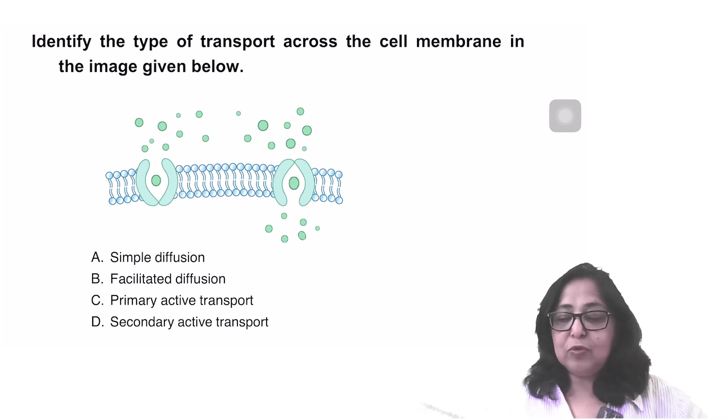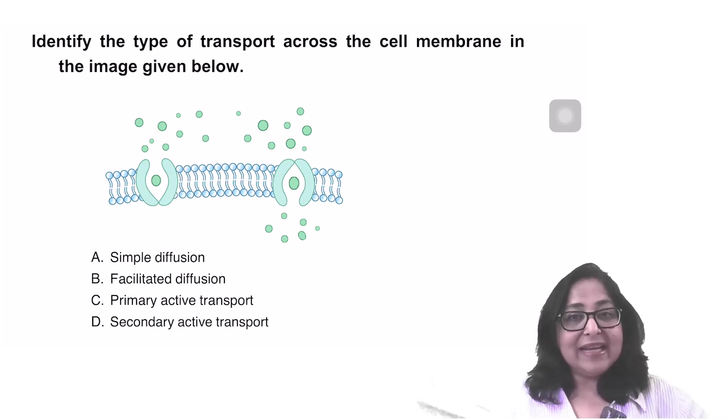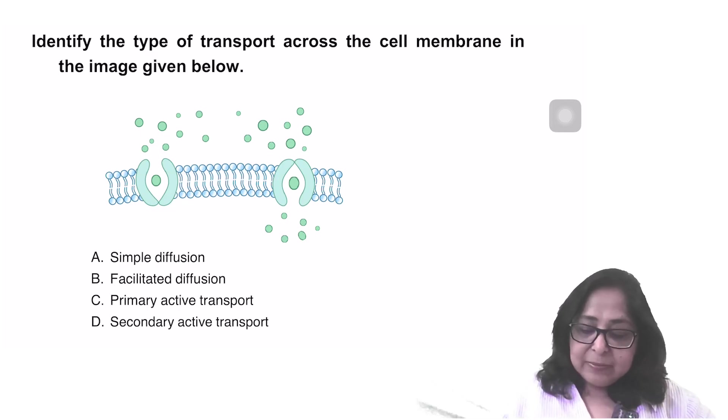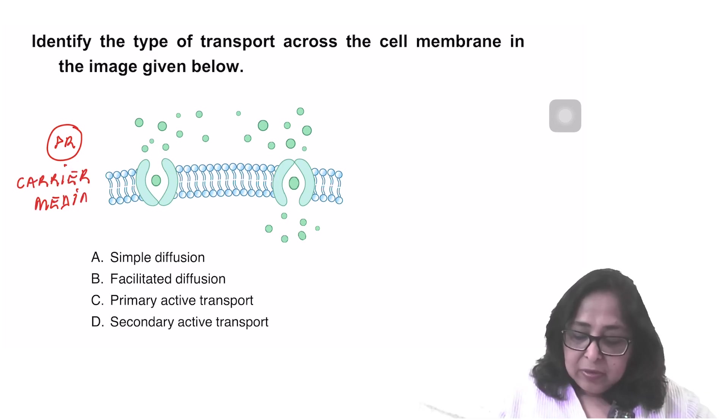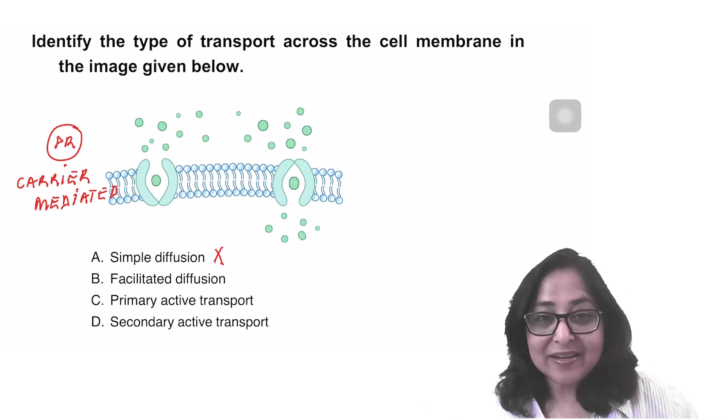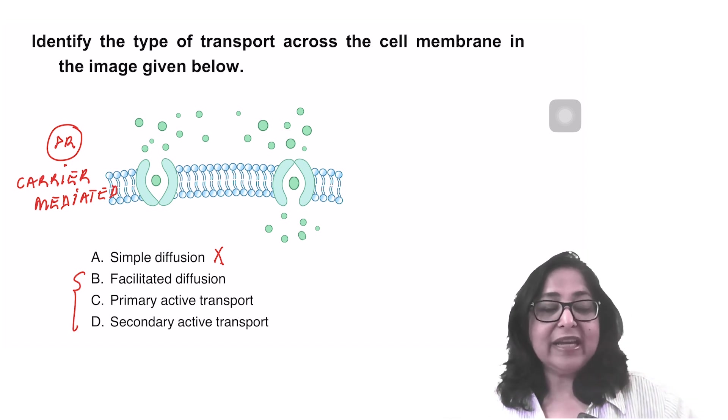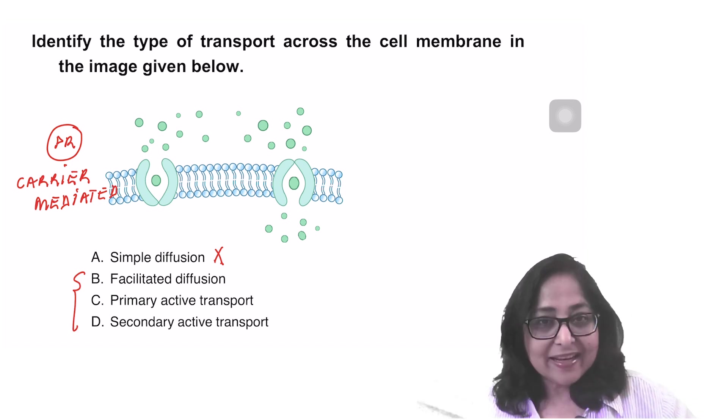Let's look at the next question. Identify the type of transport across the cell membrane in the given image. Whenever you have a question like this, the first thing I'm going to see is that there is a protein which is involved. So that means it is a carrier-mediated transport. That means it cannot be simple diffusion. Simple diffusion is not carrier-mediated. The other three, facilitated diffusion, primary active transport, secondary active transport are carrier-mediated.